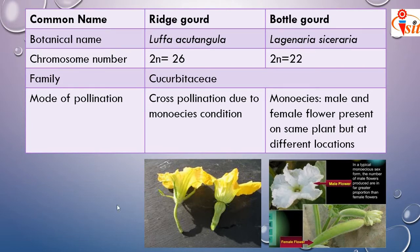Now we start the next dissection — that is the dissection of ridge gourd and bottle gourd flower. The botanical name of ridge gourd is Luffa aegyptiaca and botanical name of bottle gourd is Lagenaria siceraria. Family name is Cucurbitaceae. Mode of pollination is cross-pollination due to the monoecious condition. In monoecious condition, the male and female flowers are present on the same plant body but at different locations.